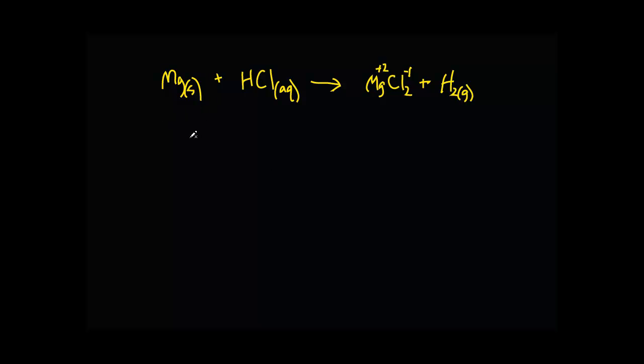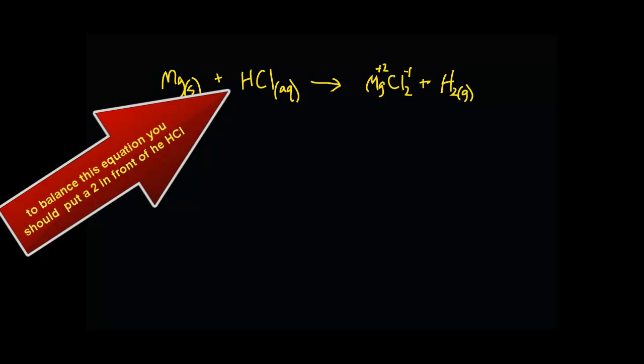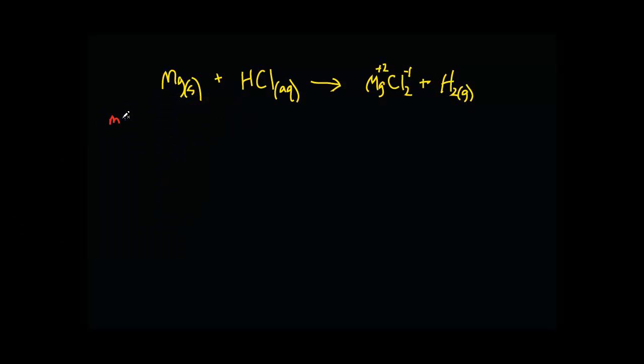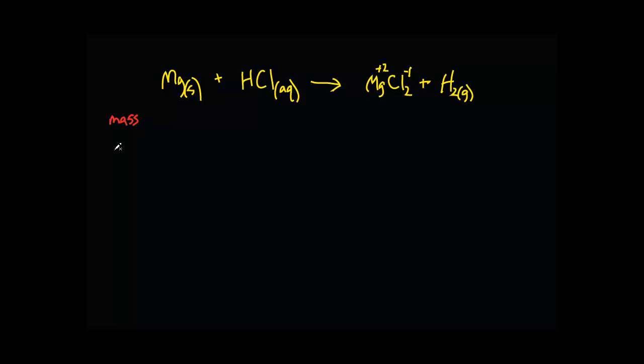Whenever you're given some type of mass in a chemical reaction, one thing you're going to want to do to organize your information is make a mass, molar mass, mole table. To review from the mole video, mole equals mass over molar mass always, and the molar mass you get from the periodic table.